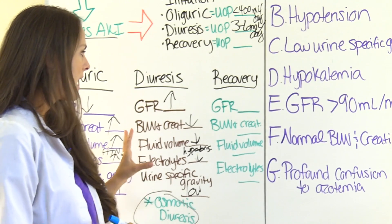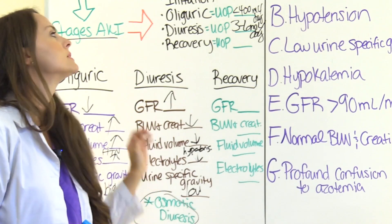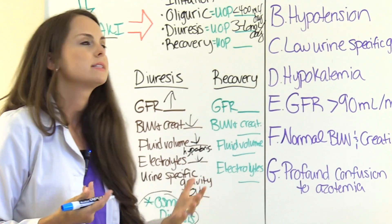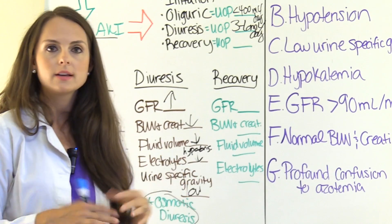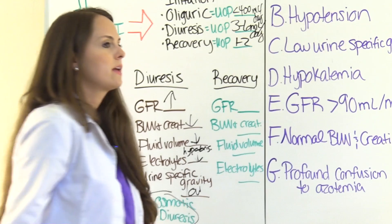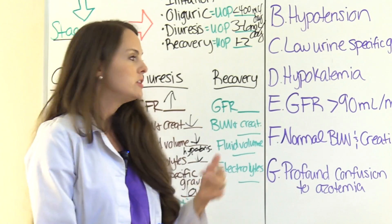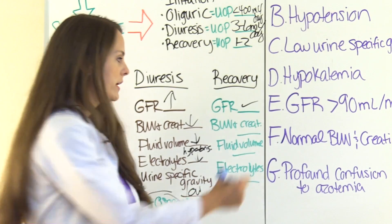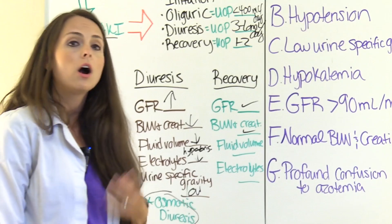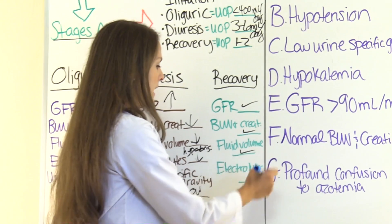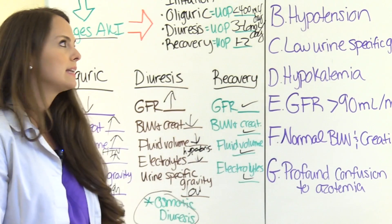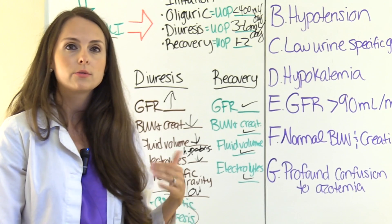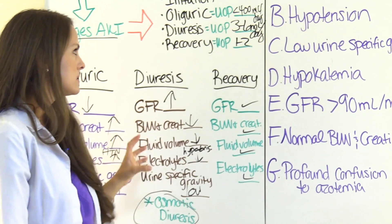So we have our complications and signs and symptoms. Why is this patient not in recovery? The recovery stage is when urinary output is normal, GFR is normal — greater than 90 milliliters per minute — BUN and creatinine are normal, fluid volume status is normal, and electrolytes are normal. This patient is voiding 4.5 liters in 24 hours, so they're still in the diuresis stage. Now let's start eliminating our options.